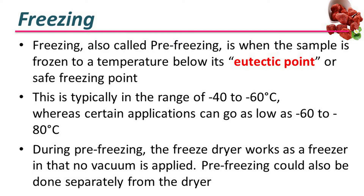Freezing, also called pre-freezing, is when a sample is frozen to a temperature below its eutectic point or safe freezing point. This is typically in the range of minus 40 to minus 60 Celsius, whereas certain applications can go as low as minus 60 to minus 80. During pre-freezing, the freeze dryer works as a freezer in that no vacuum is applied. Pre-freezing could also be done separately from the dryer.